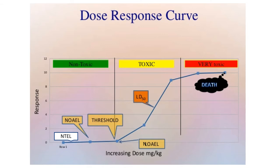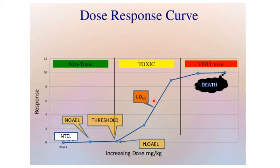The dose-response curve has log dose on the x-axis and response on the y-axis. At a low concentration, no toxic effects are observed; as concentration increases, toxic effects begin to appear. LD50 is the concentration of the drug required to kill 50% of the animals. Due to inter-individual variability, some animals may die at around LD10 while others survive higher doses. Some animals are very sensitive and some are not. The dose required to kill 50% of the total animals is defined as the LD50.